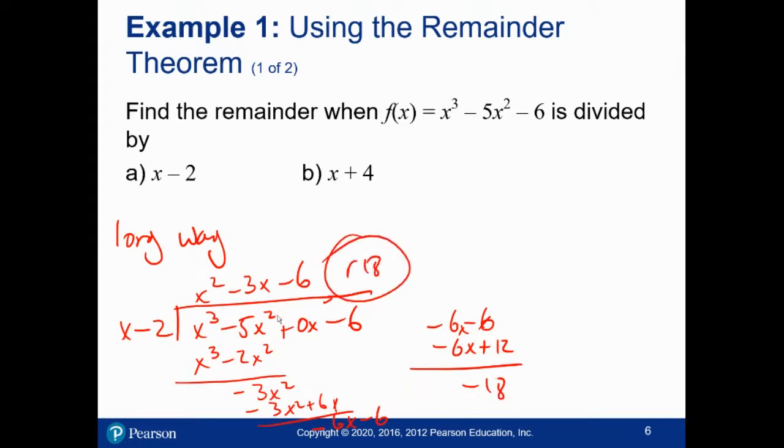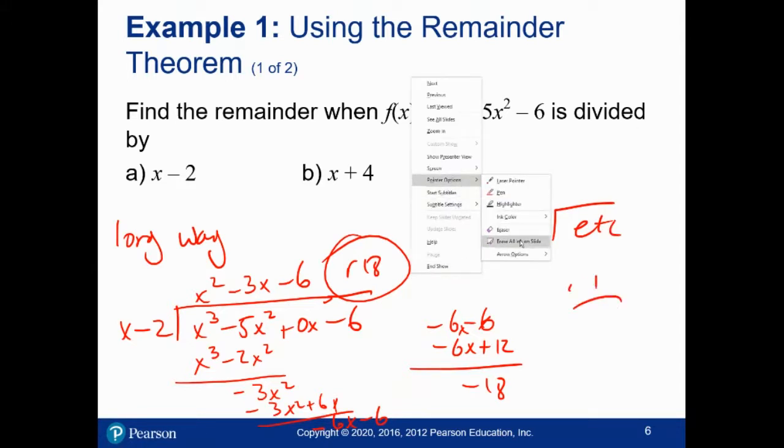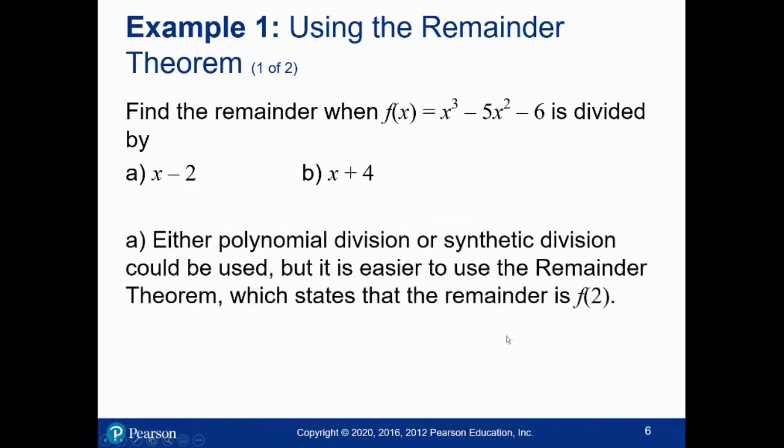That's the long way to do it. And similarly, the long way to do the second one is to actually do the division. It's doable, but this is not how you should be doing it. If we use the theorem we just learned, all you have to do is compute for the first one, what is f of 2? It's negative 18.